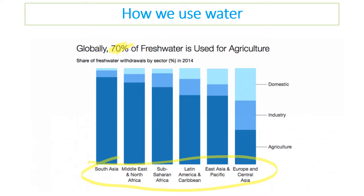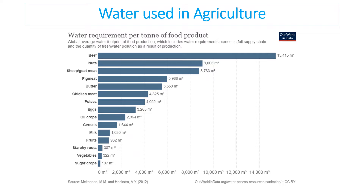This is slightly misleading because South Asia appears as the highest water user, but don't forget South Asia produces food that is used in all different regions of the world. So it's quite unfair to blame one area, because in modern times we all consume food from around the world.